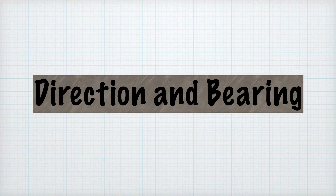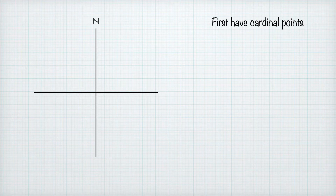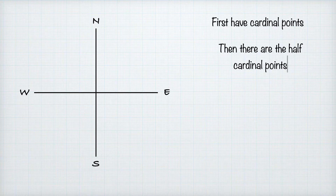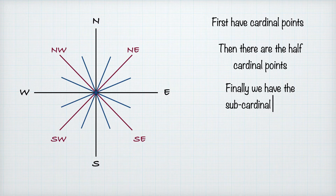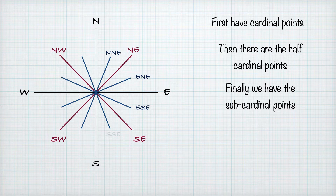We are now going to look at direction and bearing. When we look at direction we need to think about the cardinal points, and there are four cardinal points: north, east, west, and south. Then we get the half cardinal points: northeast, southeast, southwest, northwest. And then further we get the sub-cardinal points: north-northeast, east-northeast, south-southeast, west-southwest, and so forth.